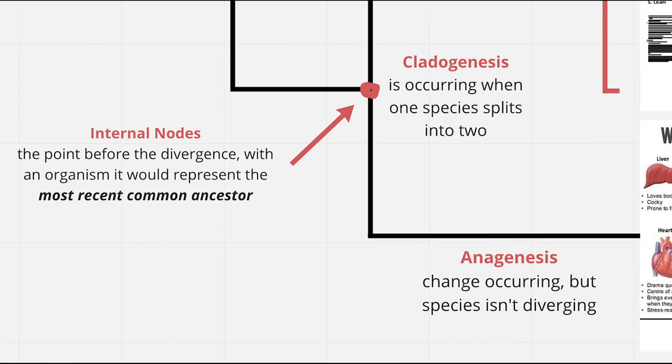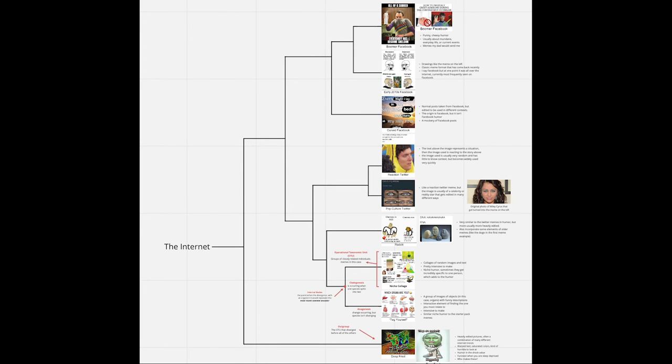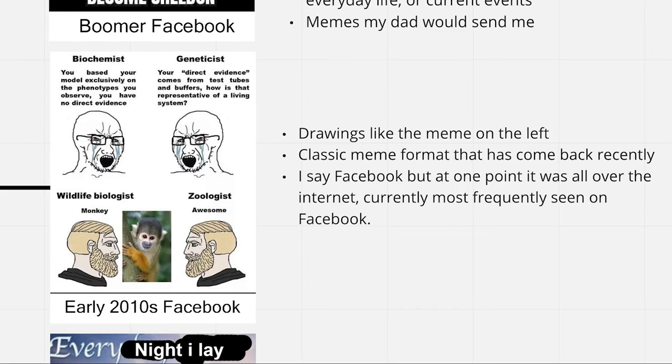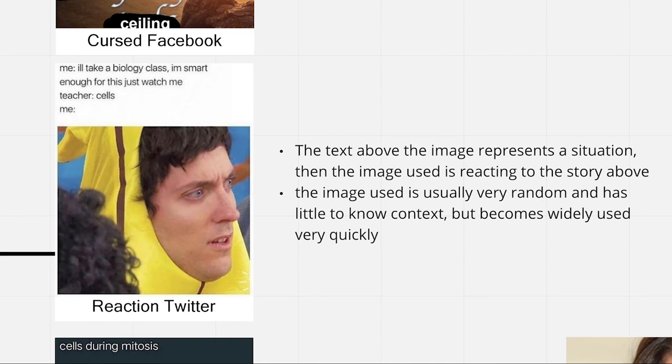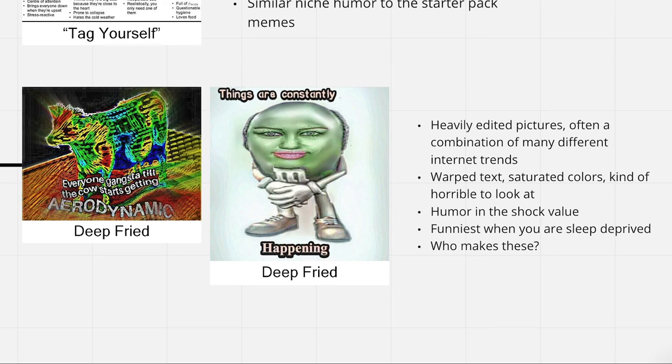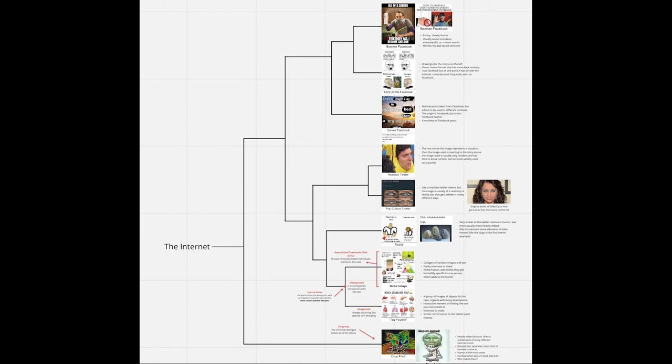Cladogenesis occurs when one species splits into two different species. The nine OTUs, or groups of memes, are Boomer Facebook, Early 2010s Facebook, Cursed Facebook, Reaction Twitter, Pop Culture Twitter, Reddit, Niche Collage, Tag Yourself, and Deep Fried. I made these groups roughly based off of meme format, type of humor, and the platform it originated on.